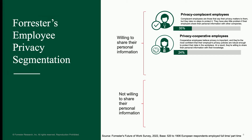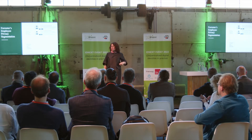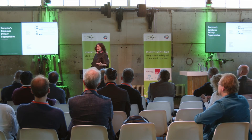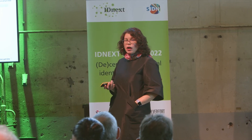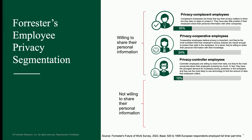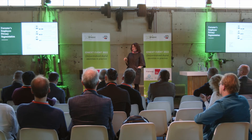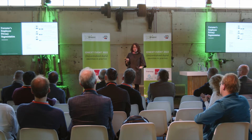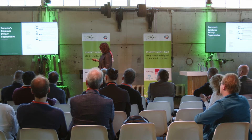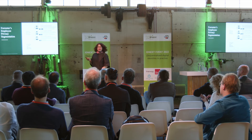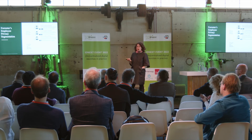Cooperative employees are willing to share data because they think their employer is going to do the right thing and is competent to do so. That's going to be 24% of your population. Then you've got your privacy controller employees — these are your most knowledgeable employees. They understand how data privacy works, how to use tools to limit the amount of information that can be collected, and they examine your privacy policies and take decisions based on those. They're about 10% of your population generally. If you work at a company whose entire job is identity or information security, you'll probably have a few more of these.